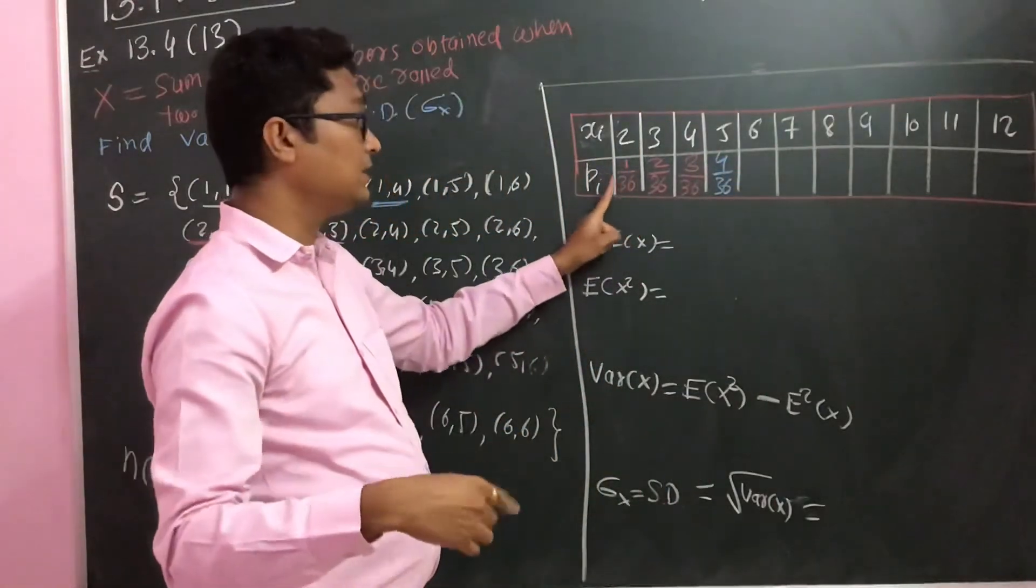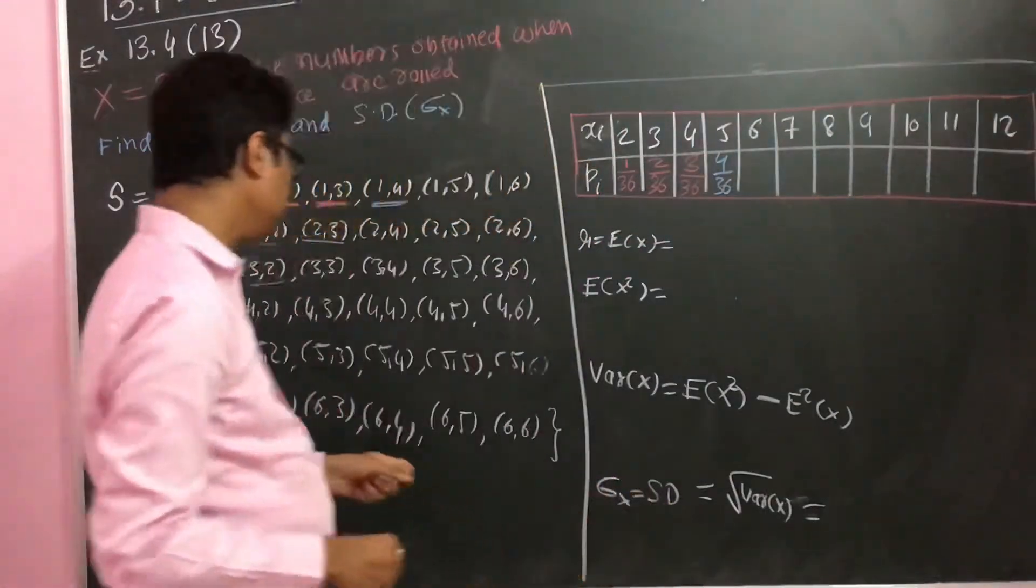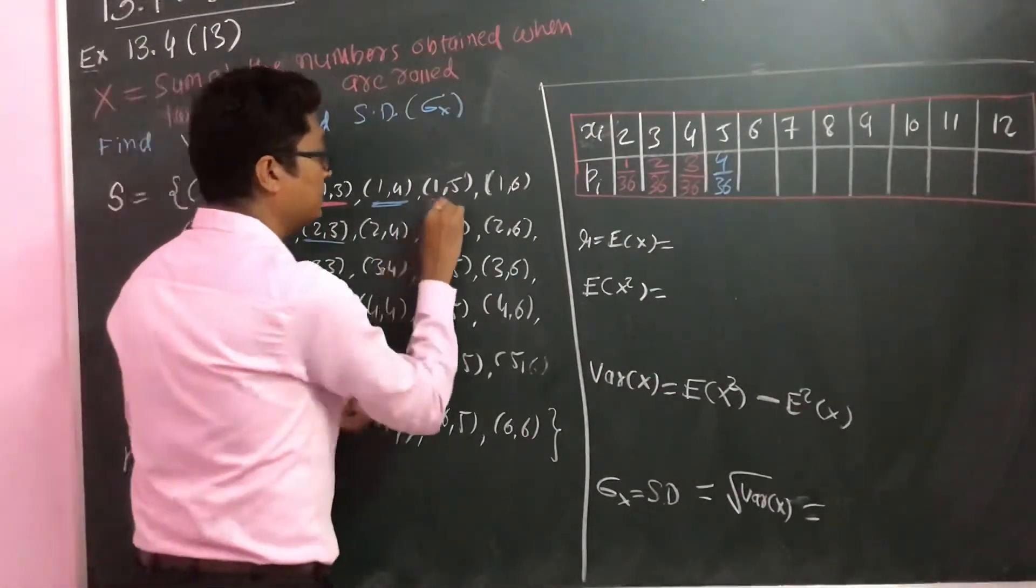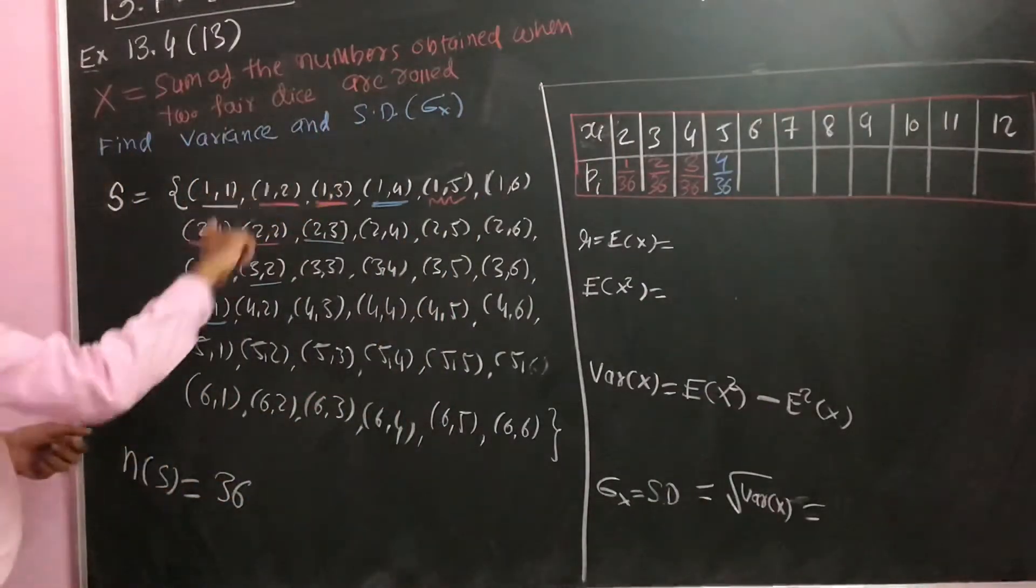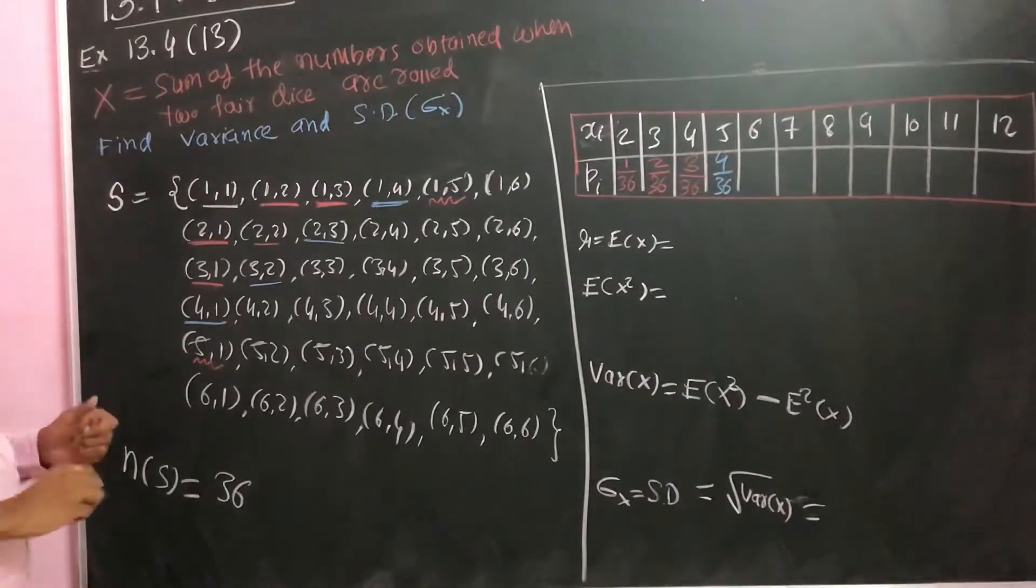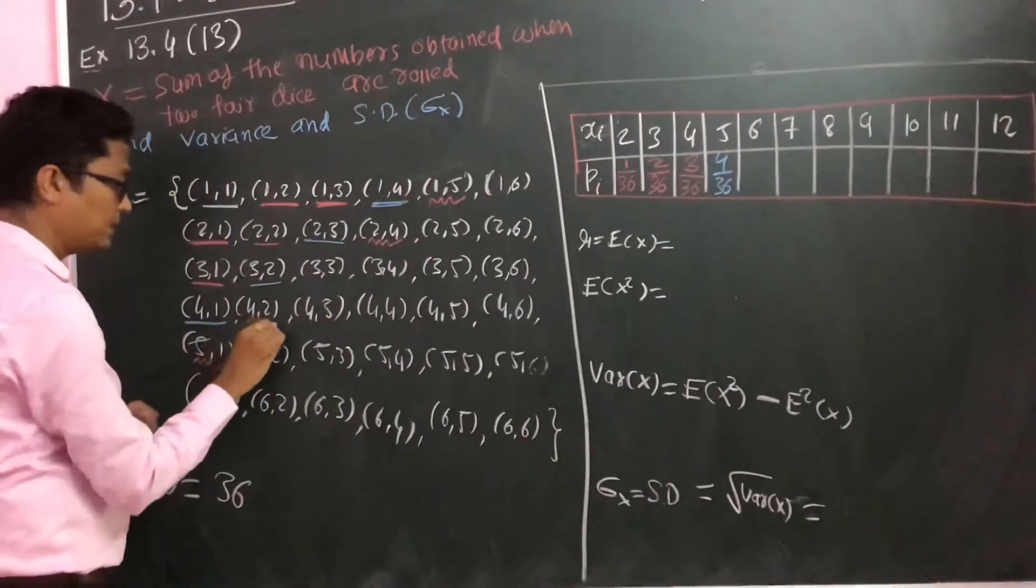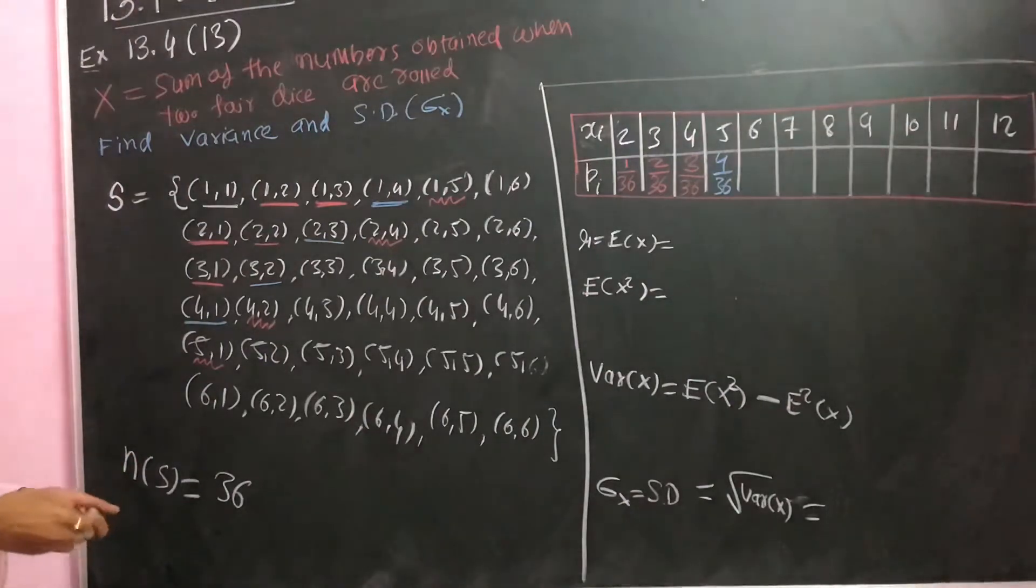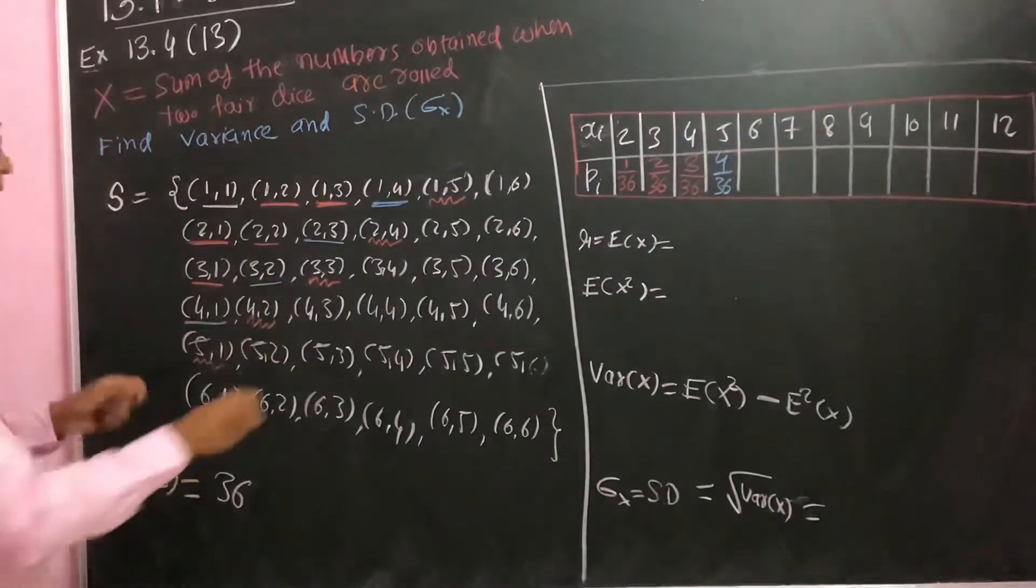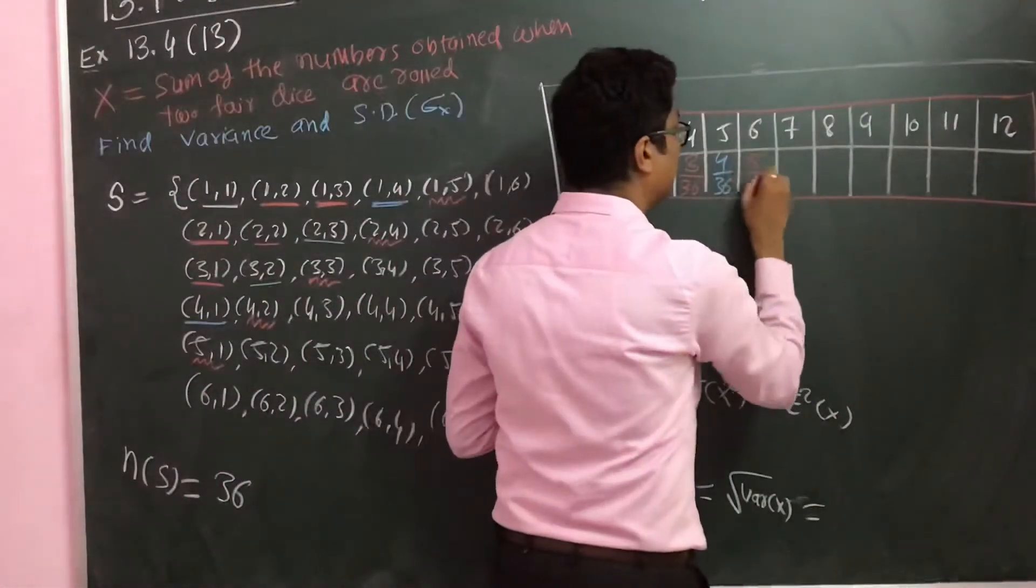If you will see this pattern, the numerator is always going to increase. Next, 6 comes up, so 5 plus 1. We have 5-1, 1-5, then 4-2, 2-4, and 3 plus 3. So 1, 2, 3, 4, and 5 combinations are there. So I will write here 5 by 36.